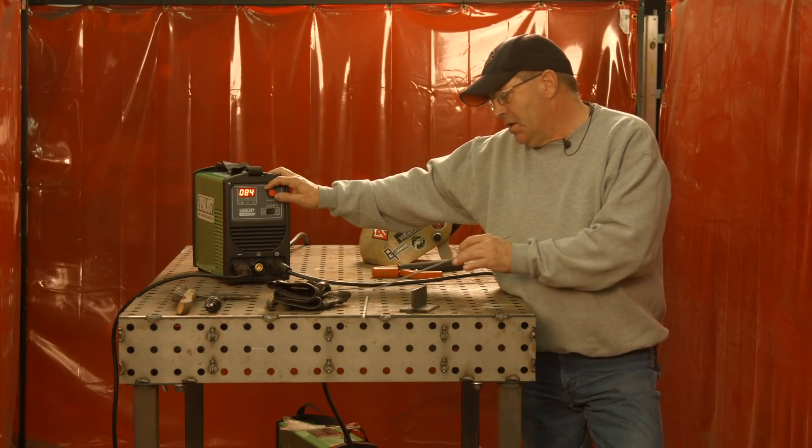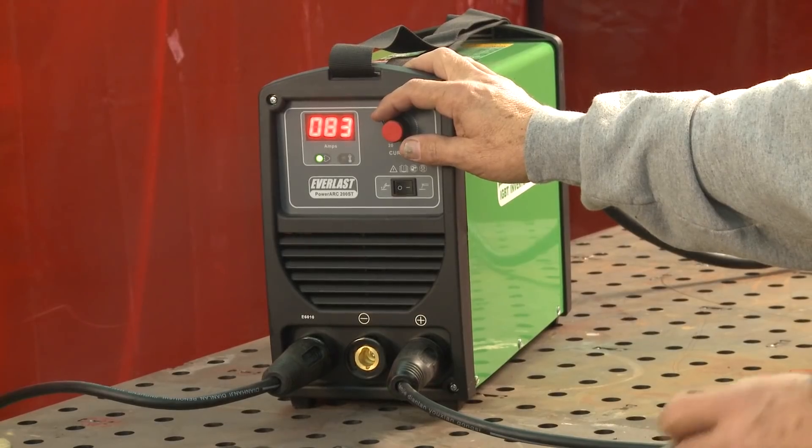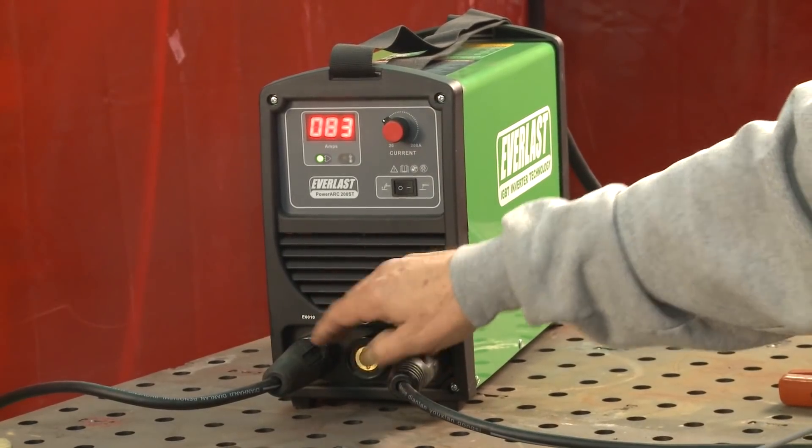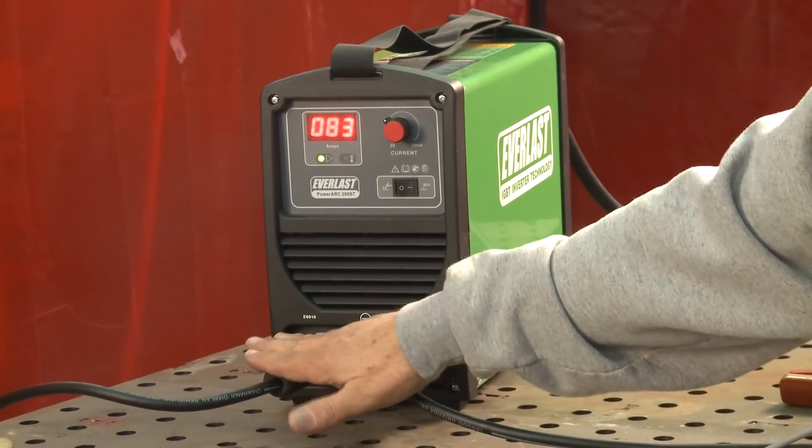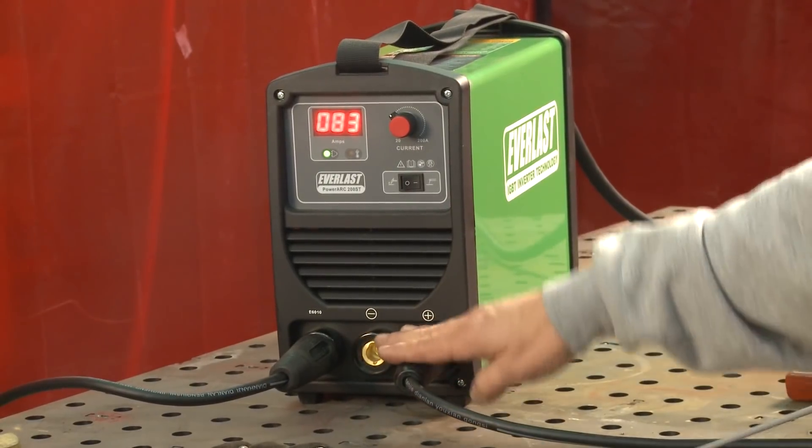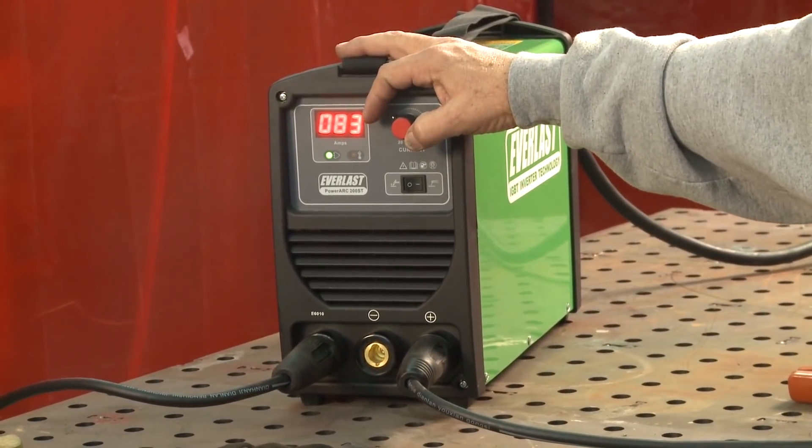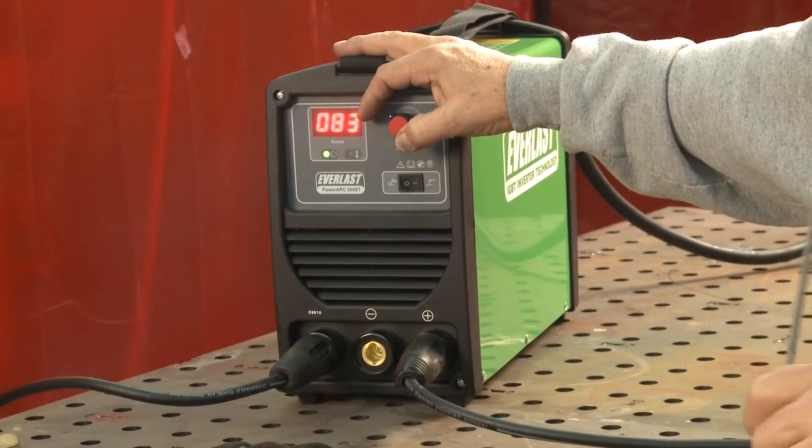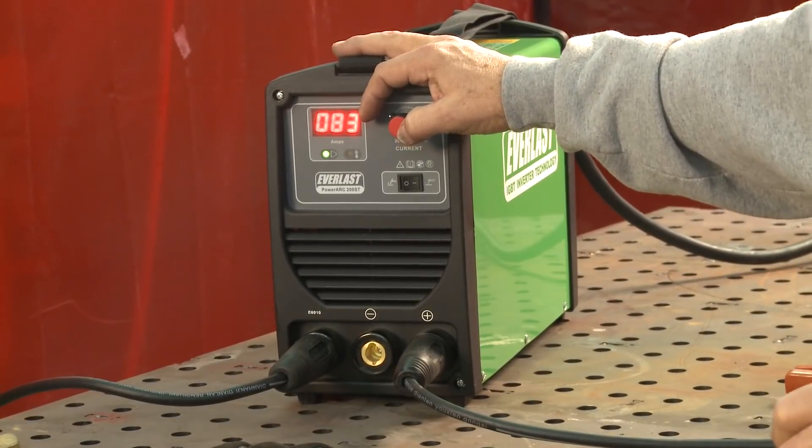And then I ran the 1/8 inch 7018 just to test it out. Switch the leads over here to a common setup. You switch for a 6010 setup, and then you switch it back for your 7018. And I think I had it set at 100, and I ended up turning it down to 90 while I was welding.